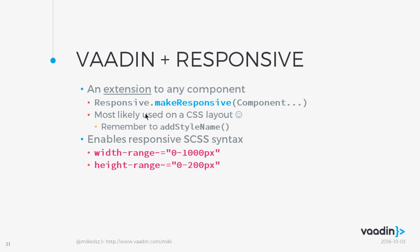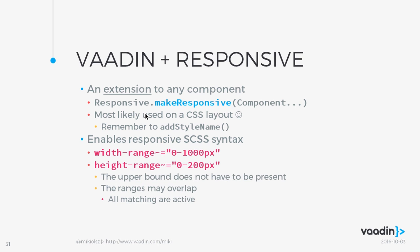What you get is that you can use responsive CSS syntax — specifying a width range or height range of your component and adjusting the styles accordingly. The upper bound doesn't have to be present, so you can make it from 100 pixels and up. The ranges you define may overlap, and all of those that are matching are active. One condition applies: all resources must be in the same domain, so unfortunately no referencing of anything outside your application.